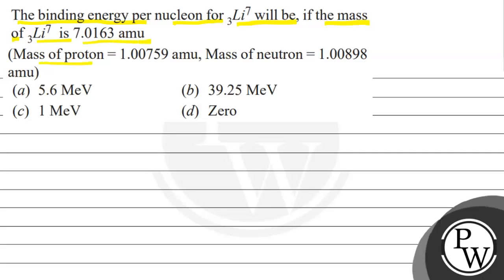Mass of proton is equal to 1.00759 atomic mass units. Mass of neutron is equal to 1.00898 atomic mass units.